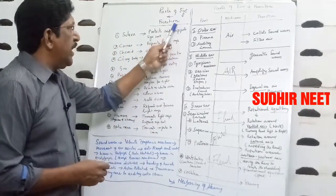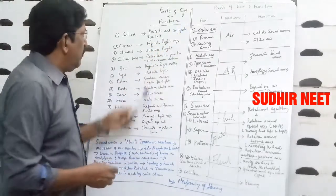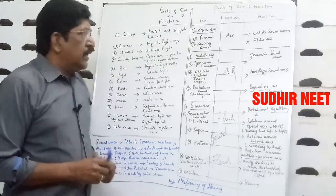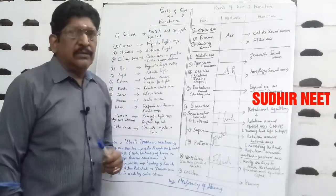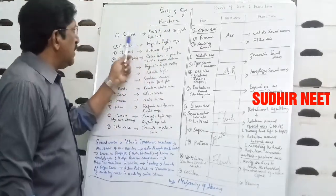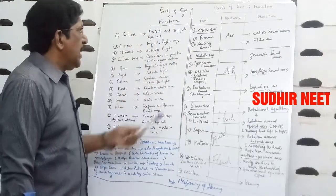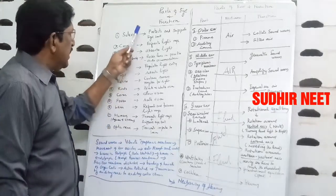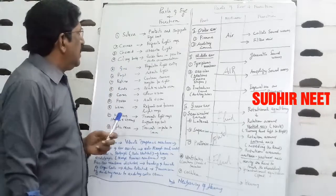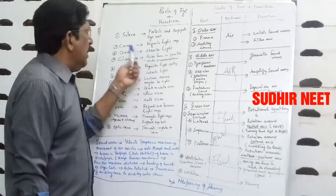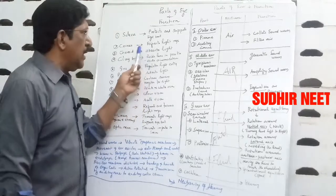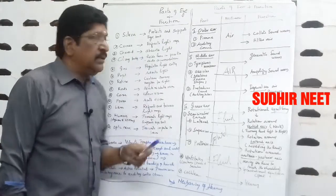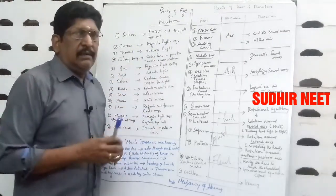Let us take first the parts of the Eye and their functions. First, sclera — that is the outermost layer of the eye. It protects and supports the eyeball. Number two, cornea. The sclera in front of the eye becomes the cornea. The function of the cornea is that it refracts the light rays. When the light falls on the eye, the cornea refracts the light rays.